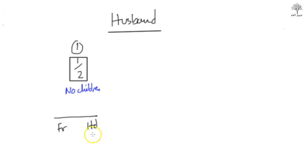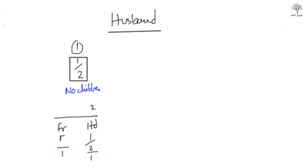For example: a husband and a father are left behind. The husband will get a half, and the father will get the remainder because there are no kids. So we start from 2 — the highest number here. He gets 1 and 1 is left for the father. Split the cake into two: half goes to the husband, half goes to the father.